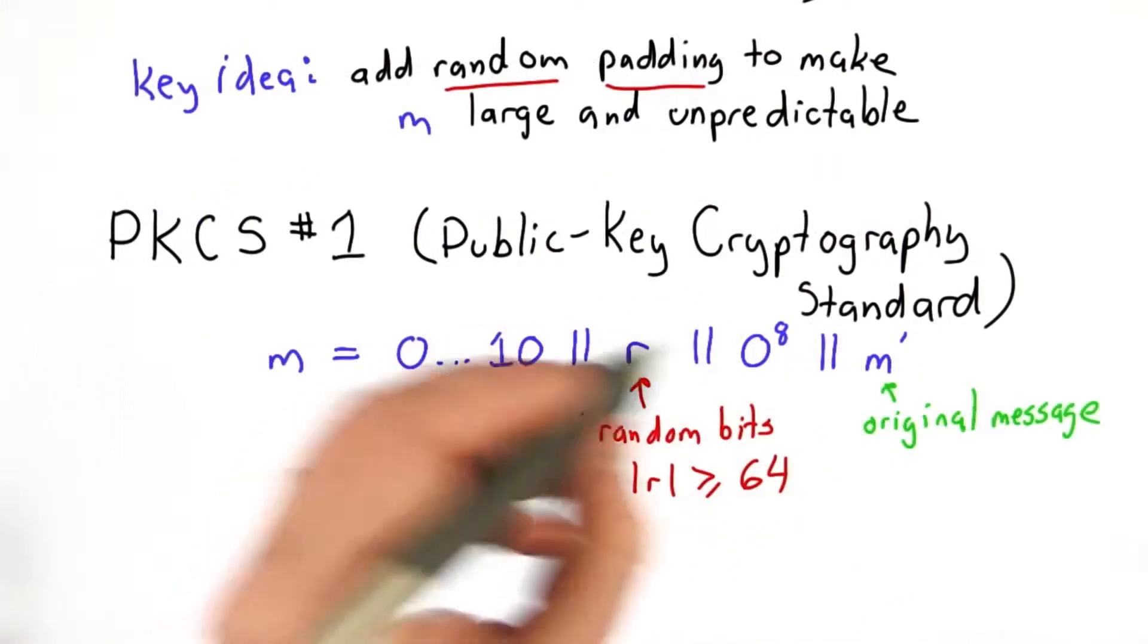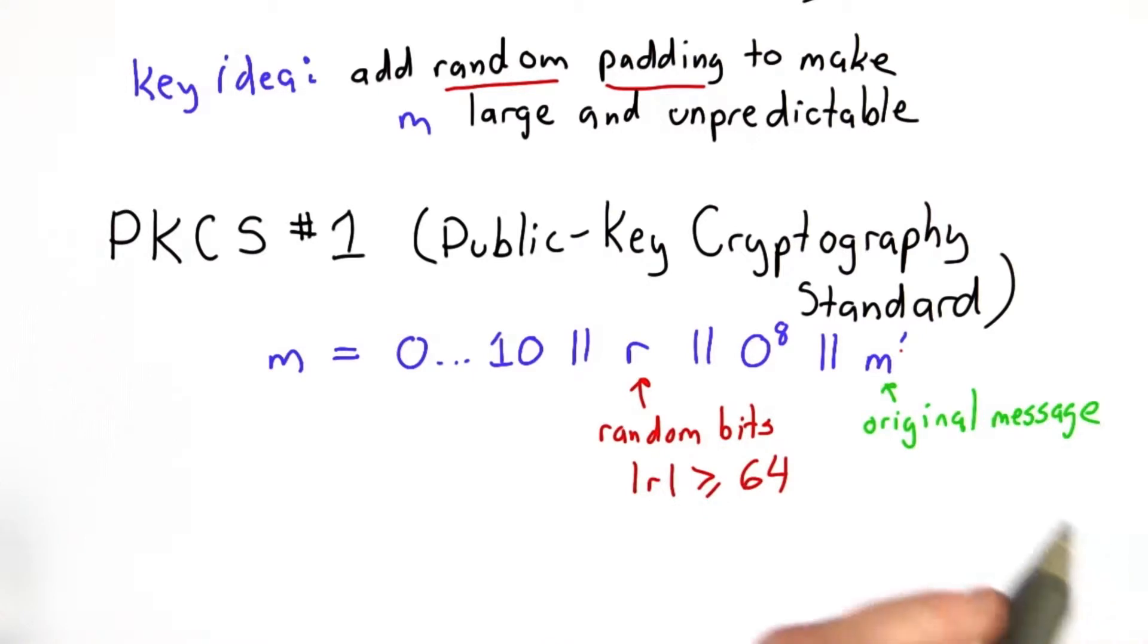And this uses at least 64 random bits. Depending on the length of the message and the size of n, it may use more.